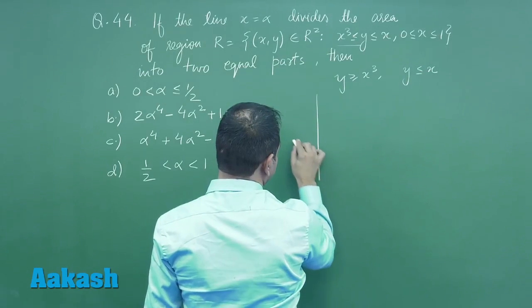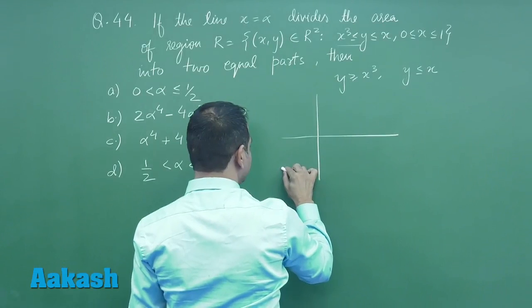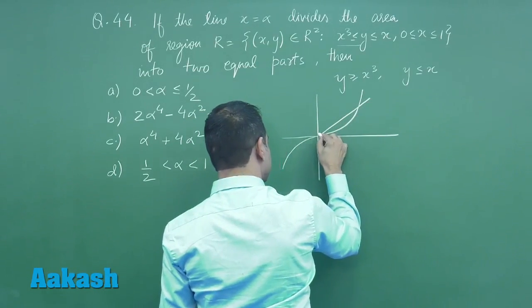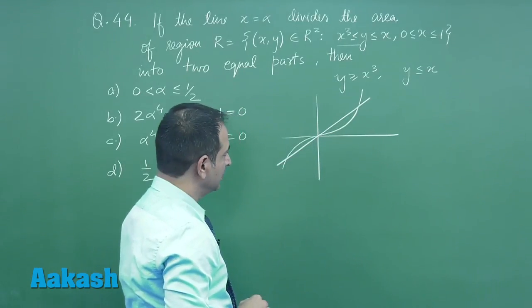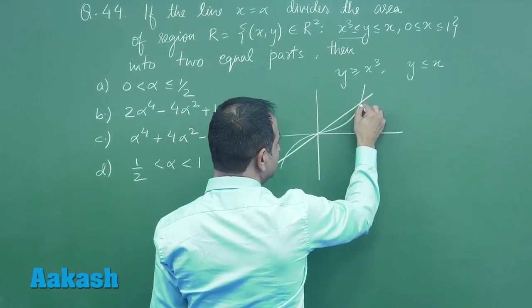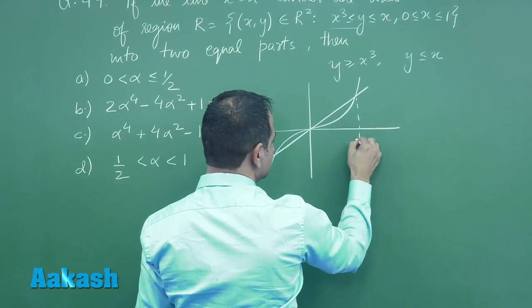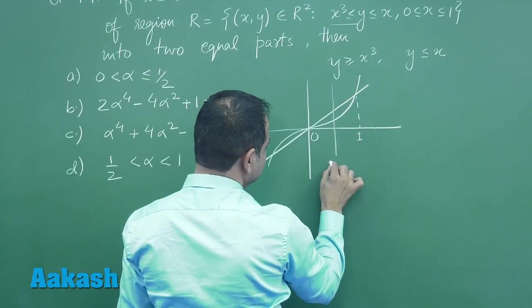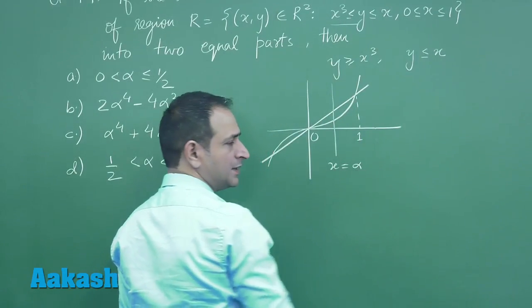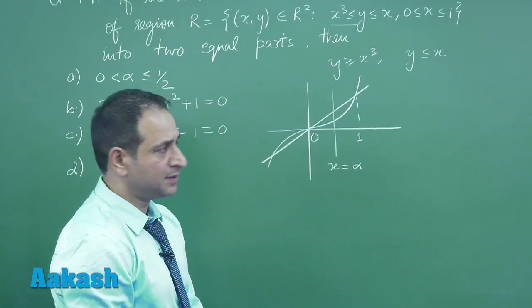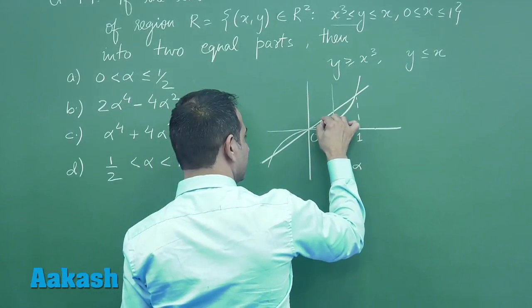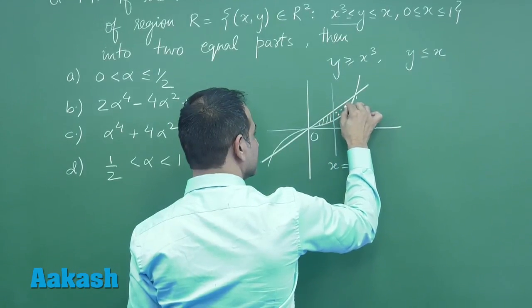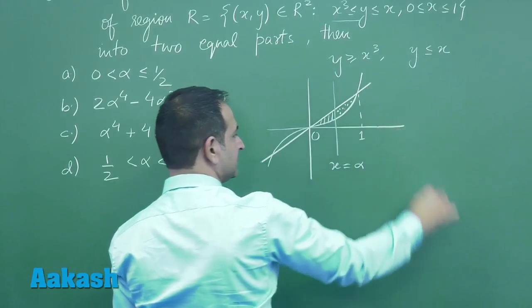So tracing here will give you this part and y = x is definitely this part. Now you can see this is the bounded region between 0 to 1 and here is the line x = α which is dividing the area into two equal parts. This is one part and definitely this is another part.